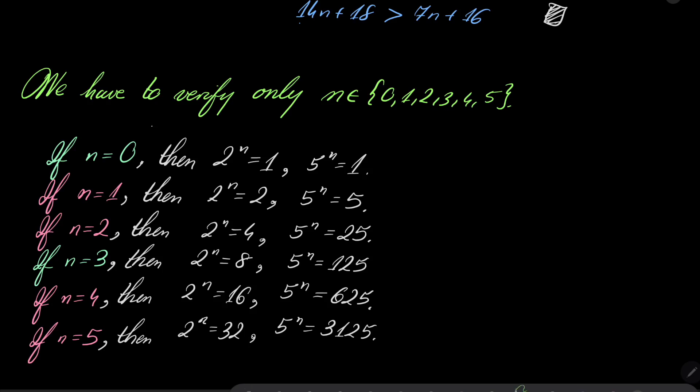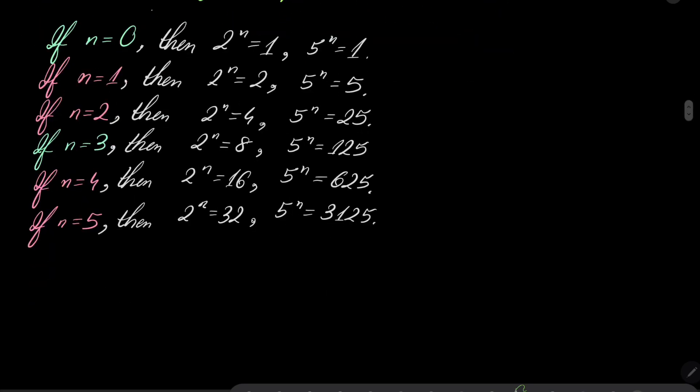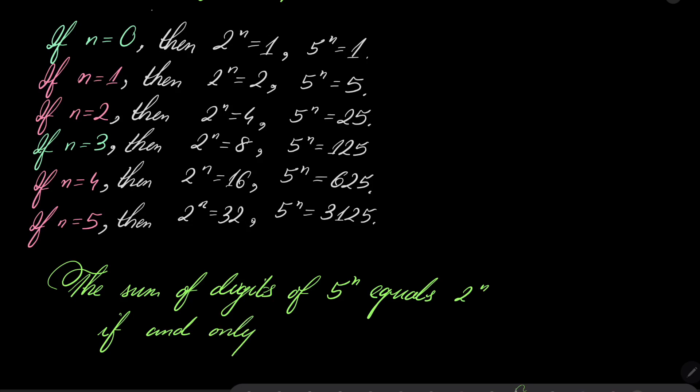So we don't have any other solution. So all in all, our equation has exactly two solutions, 0 and 3. So the sum of digits of 5 to the power of n equals 2 to the power of n if and only if n is either 0 or 3.